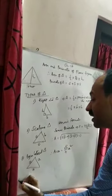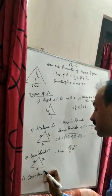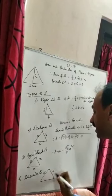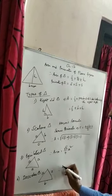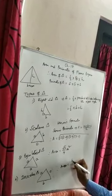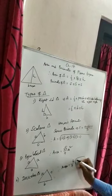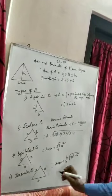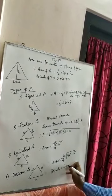Next we have isosceles triangle, where two sides are equal and the third side is not equal. Therefore, area is given by B by 4 into root over of 4A square minus B square, and perimeter of isosceles triangle, you can use 2A plus B.